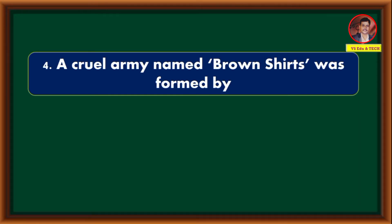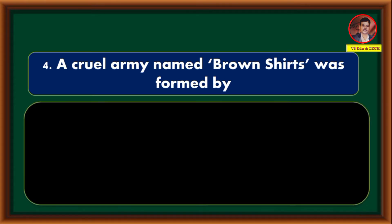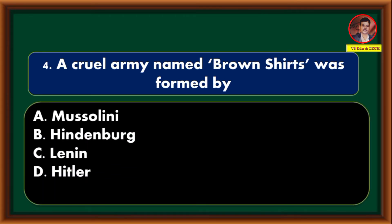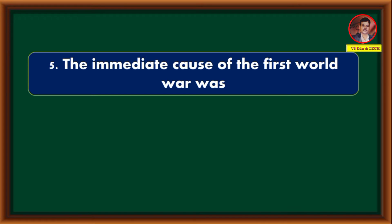A cruel army named Brown Shirts was formed by — Mussolini, Hindenburg, Lenin, Hitler. Correct answer is option D: Hitler.